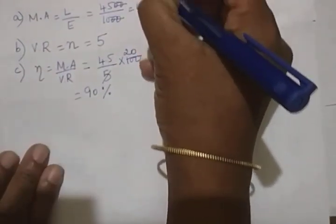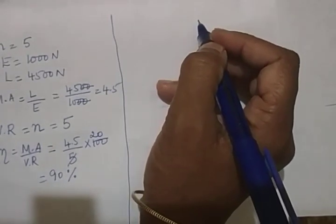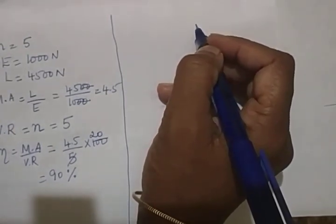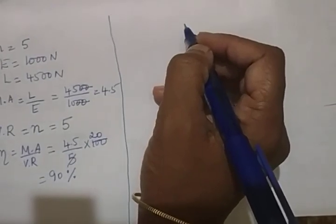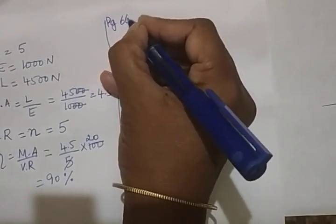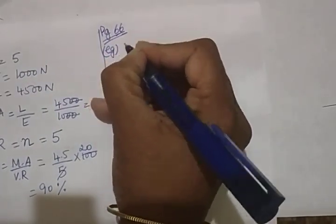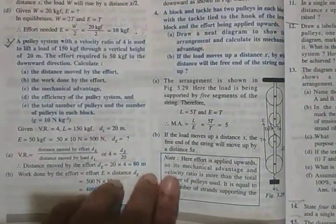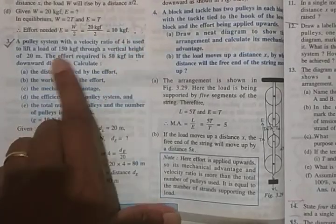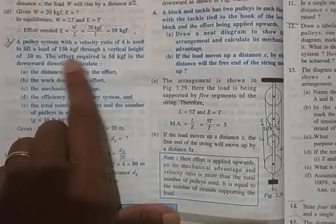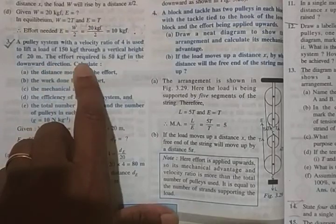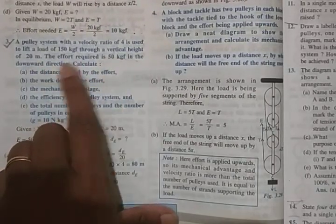Next, turn to page number 66. Example question number 3. This is a question, again, it's been asked repetitively. So I thought I will explain it to you. A pulley system with a velocity ratio of 4 is used to lift a load of 150 kgf through a vertical height of 20 meter. Effort required is 50 kgf in the downward direction. Calculate all these things.